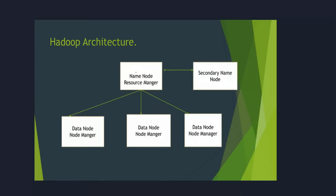This is the architecture of Hadoop, where we have a name node and a resource manager. The cluster will have a name node installed as a separate node, a secondary name node as another separate node, and multiple data nodes — any number of data nodes as required.